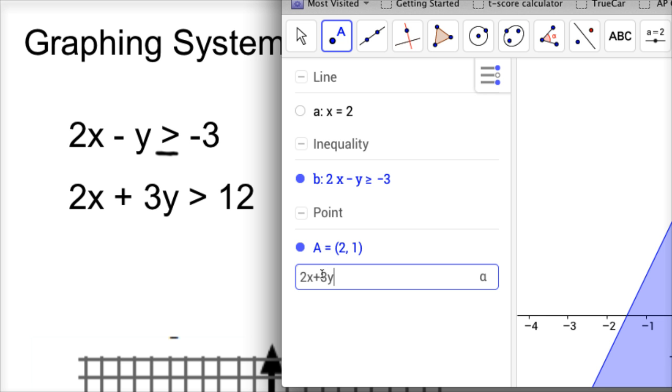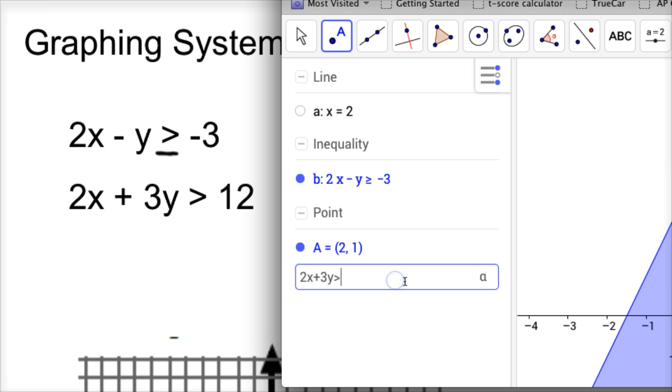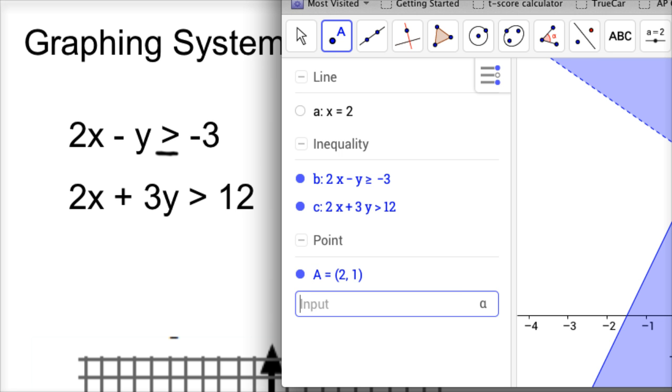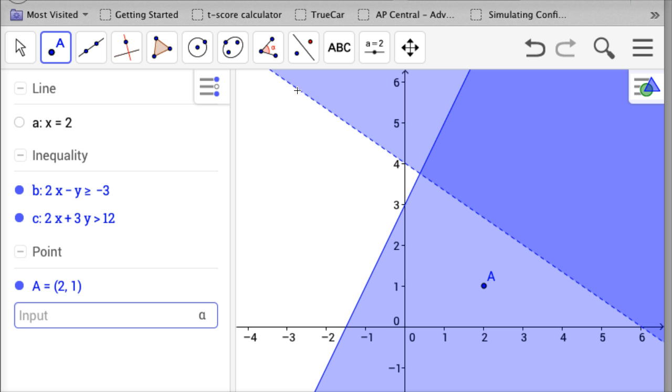2x plus 3y, now this time I do have a symbol for this, it's greater than, or you could probably pick the greater than symbol out up here somewhere. Maybe it doesn't have it because it's on your keyboard. And then it's greater than 12, hit enter, and there's that equation. And you notice, because it's greater than, it's a dotted line instead of a solid line. I'm going to change that color.